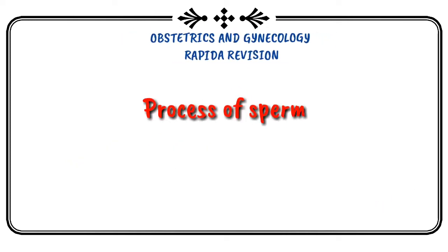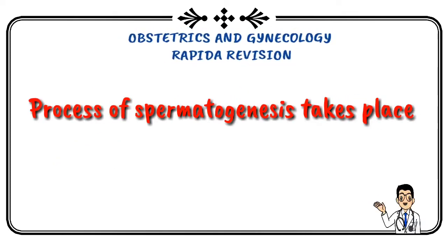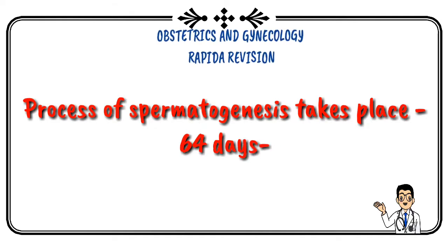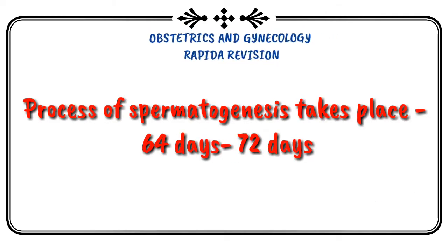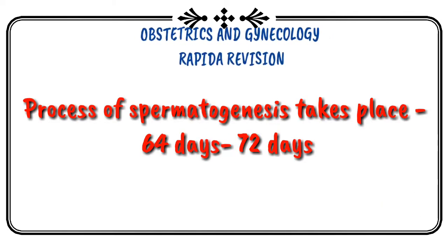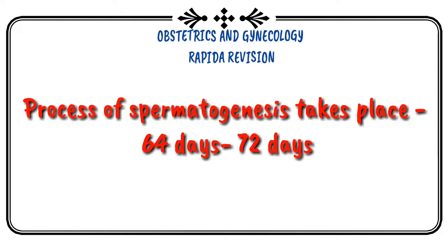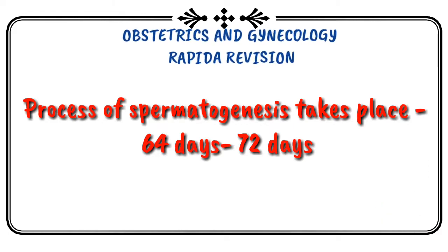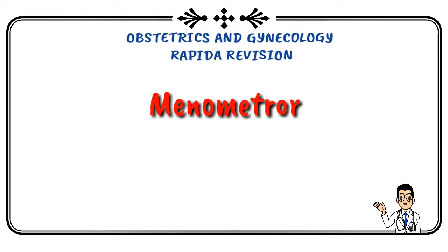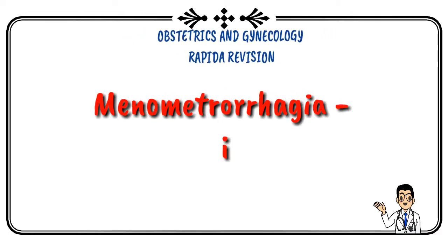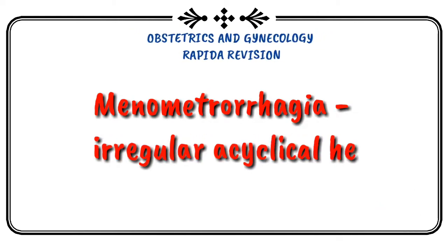Spermatogenesis takes 64 to 72 days. Menometrorrhagia is irregular, acyclic, heavy bleeding.